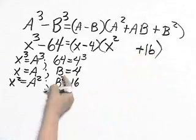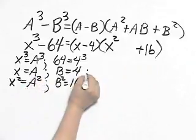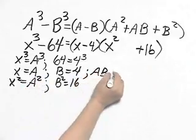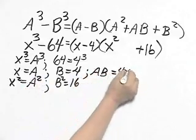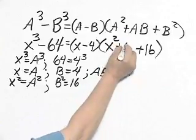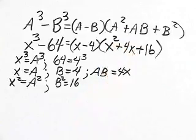Everything's in there except that AB. Now A times B is 4X plus 4X. The problem's done.